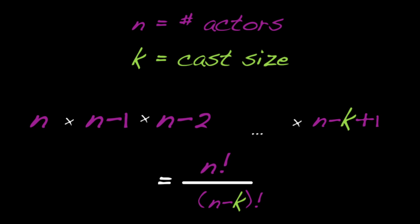Now, we have to divide by k factorial because there are k factorial ways to order the k choices.